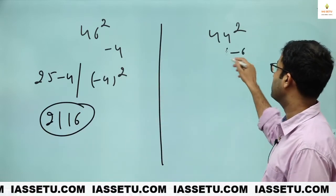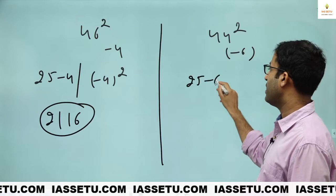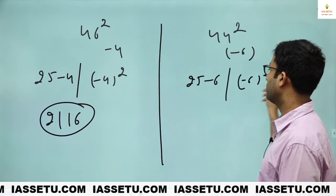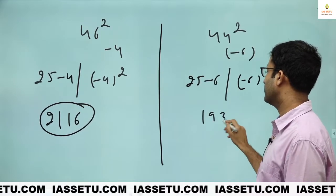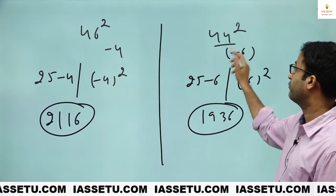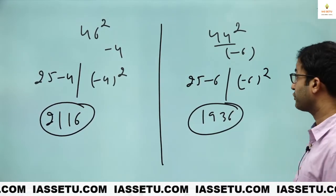Here this is minus 6. 25 minus 6. Minus 6 square. This is 19. 6 square is 36. 1936. So 44 square is 1936.